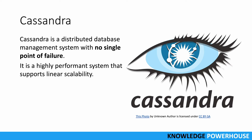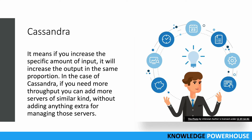Cassandra is a highly performant system and it supports linear scalability, meaning if we increase a specific amount of input, the increase in output will be in the same proportion. If you need more throughput in Cassandra, you just need to add more servers of the same kind — there's no need to add extra servers for managing those servers. Management overhead is very low; it's more like a democratic protocol. You need more servers, they provide more scalability in the same proportion, without needing to increase master or managing servers.